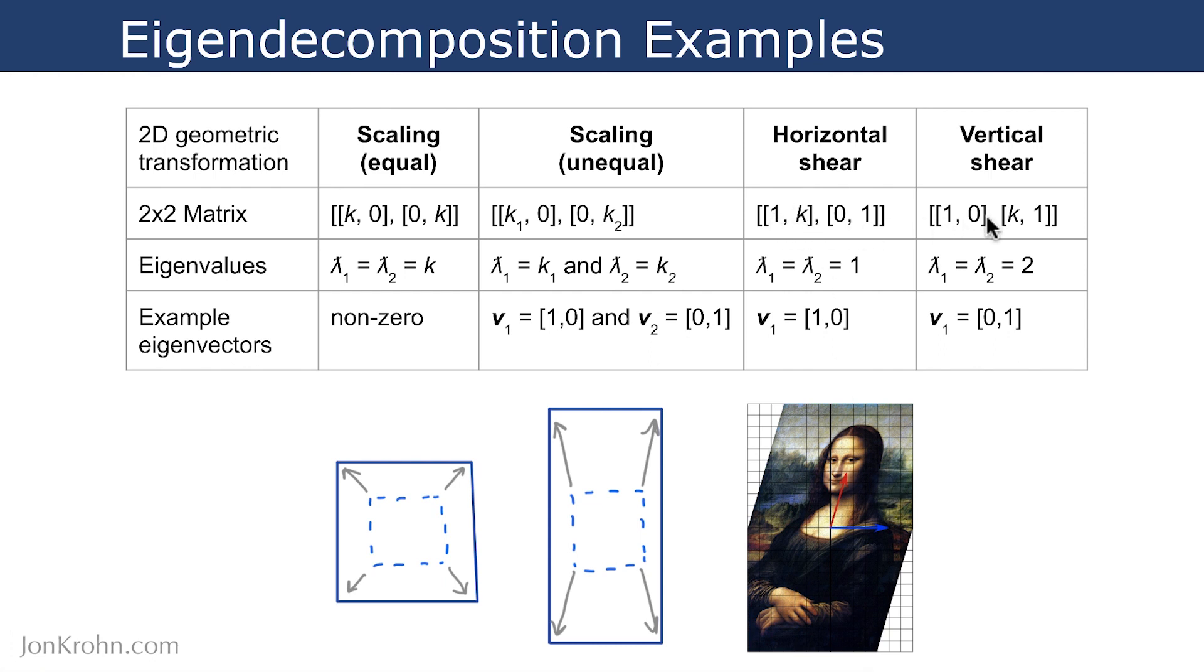And here are the matrices for carrying out a horizontal or a vertical shear. So you have a couple of 1s, and then a k either in the top right corner for the horizontal shear, or in the bottom left corner for the vertical shear. And for the horizontal shear, we end up with all of our eigenvalues being equal to 1, and equal to 2 for the vertical shear. And here are some example eigenvectors for both of those circumstances.